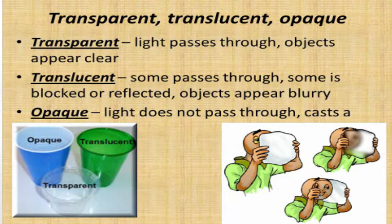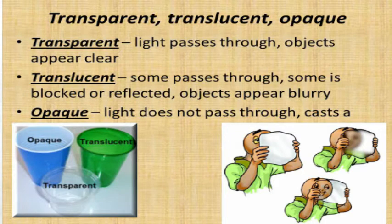We also discussed translucent. Translucent means the material through which some light can pass through it. That is called a translucent material. For example, tissue paper and butter paper — they come under translucent material.